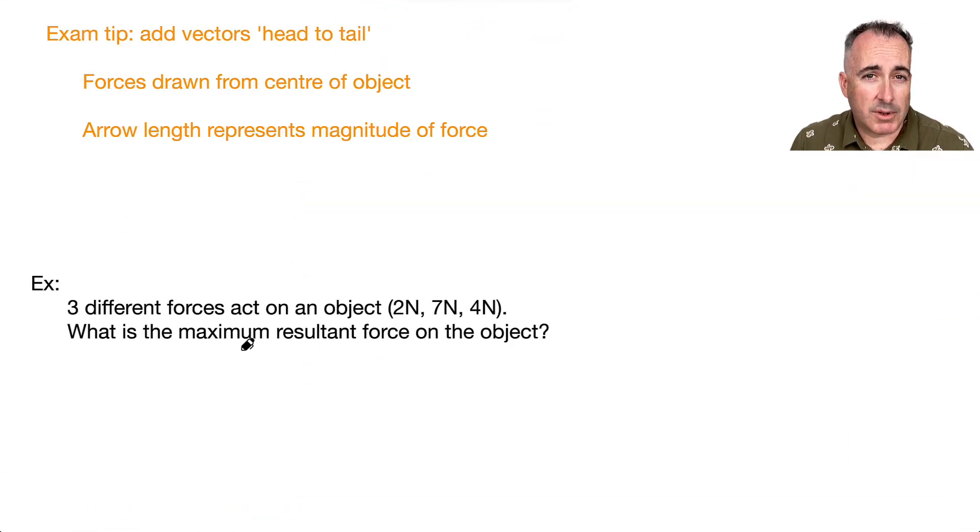When we deal with more complicated situations, it's important to know how to add two vectors. Let's say I had this object right here with a force going upwards acting on it, that's F1, and another force acting to the right, F2. I could draw them in a free body diagram right here like this. But if I want to figure out the resultant force, I could add these two vectors up and figure out what the sum is.